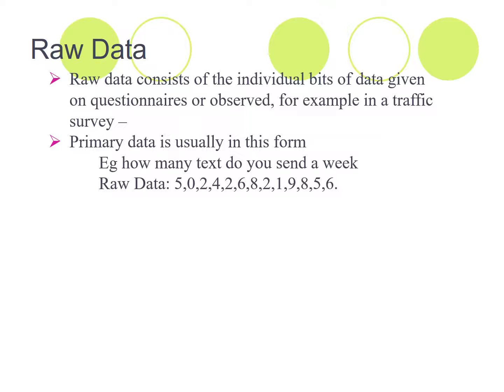Primary data is usually in this form. So for example, you might ask people how many texts do you send per week, and the first person might have said 5, 0, etc.